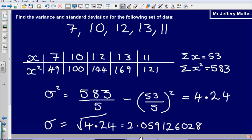And so we end up with a value for variance of 4.24. And then for the standard deviation, the square root of our variance, 2.059126028.